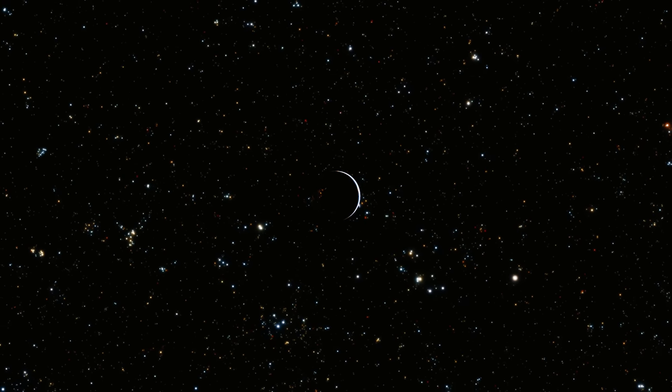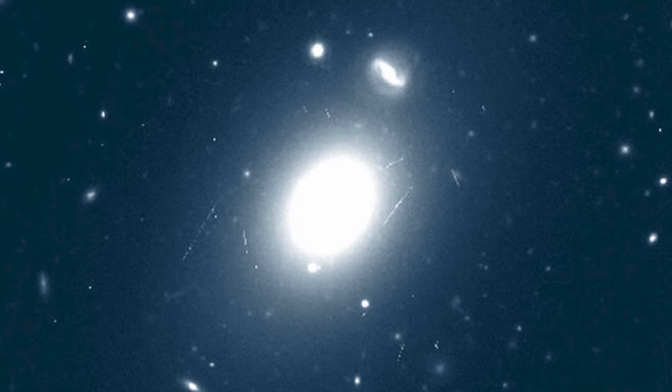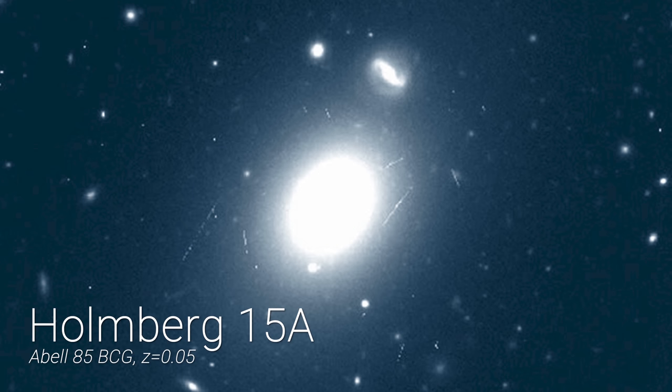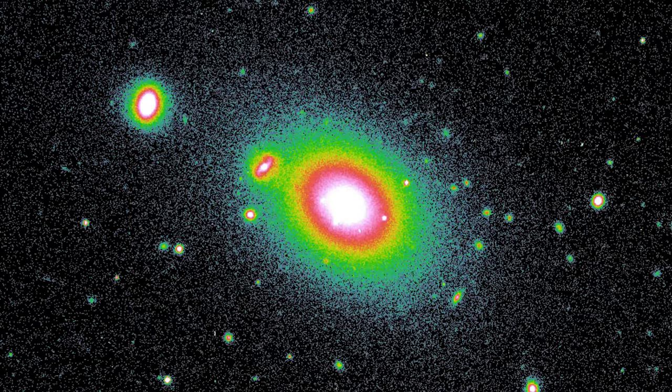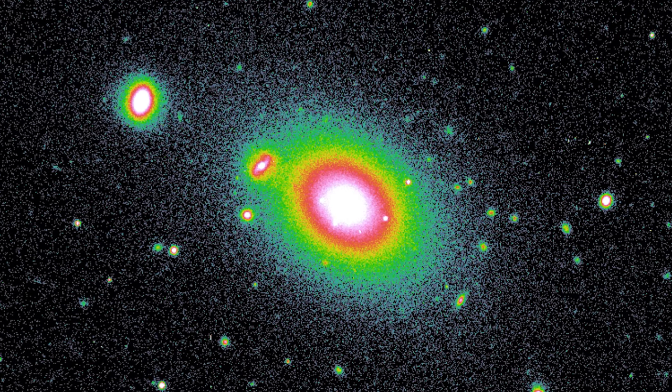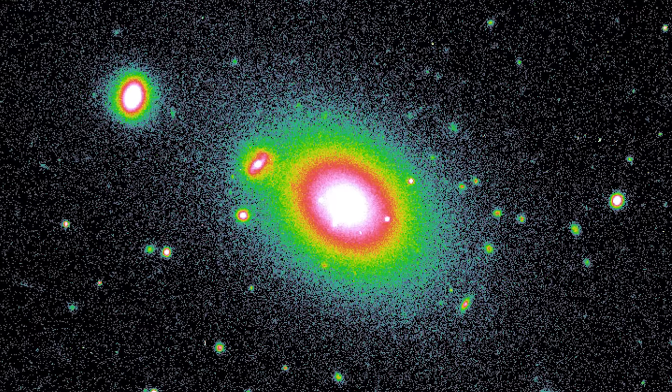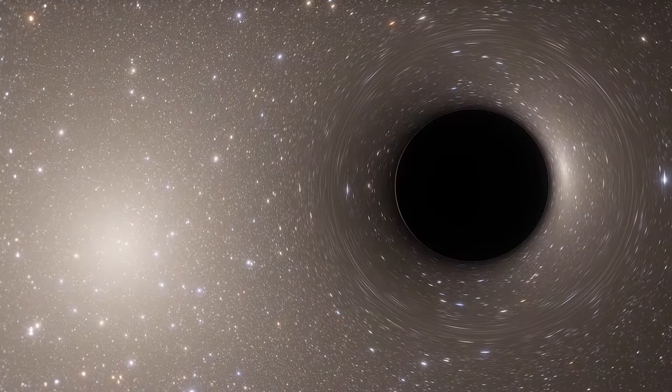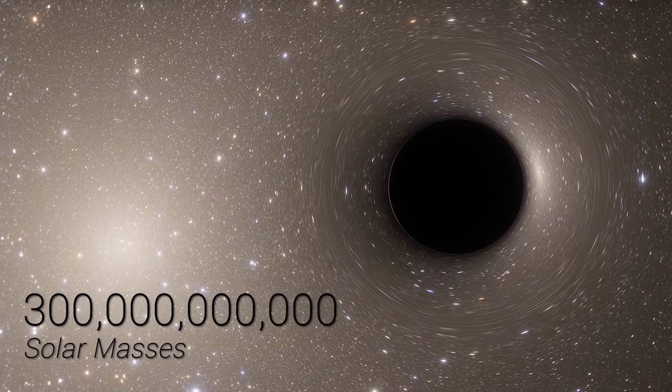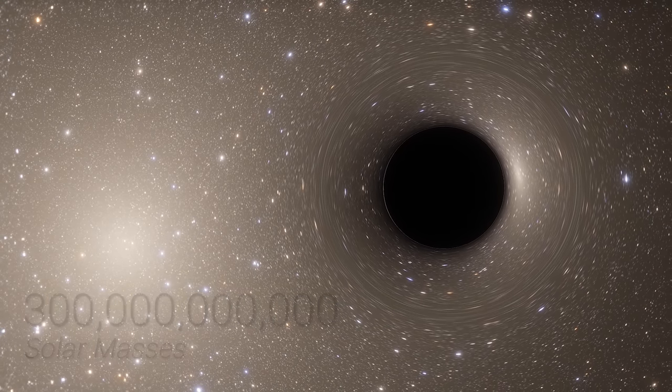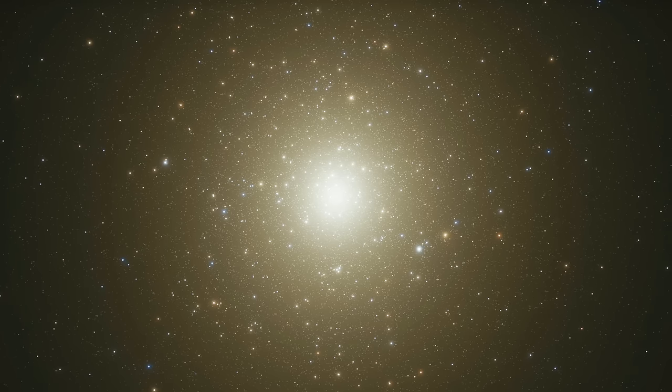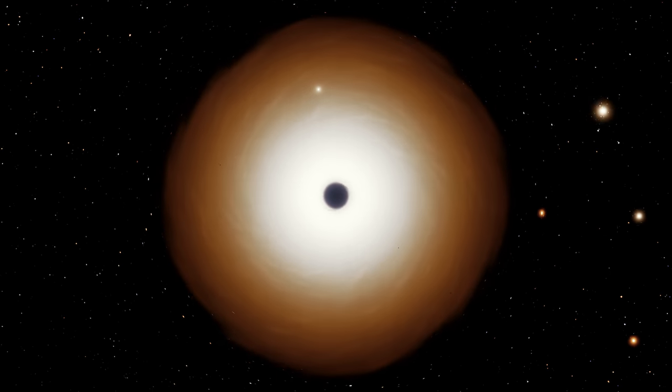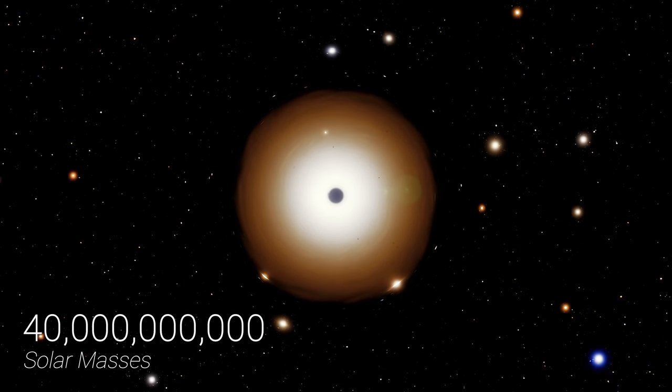There's also that other ultramassive black hole we spoke about earlier, Holmberg 15A star, within a giant elliptical galaxy 700 million light years from Earth. The black hole at the heart of this galaxy is another whose size has been historically beefed up by overly optimistic predictions, with studies in the early 2000s proposing its mass to exceed 300 billion suns. But in 2019, this figure was substantially reined in using our most detailed observations of the galaxy's nucleus to date, to a more realistic 40 billion solar mass figure, in line with the aforementioned.